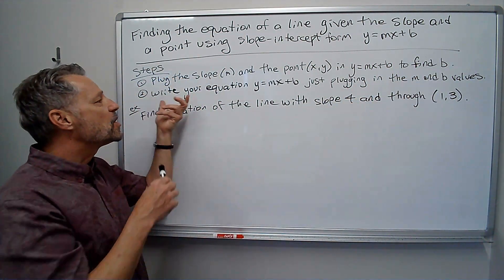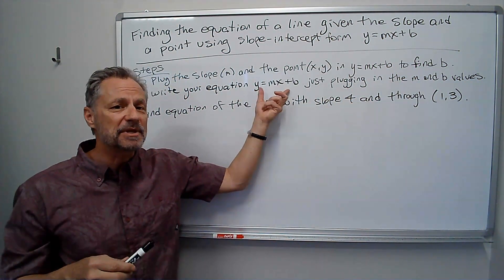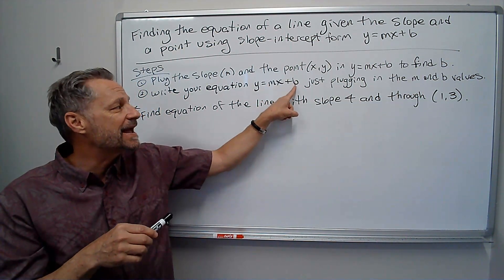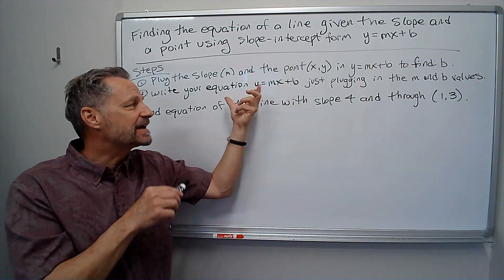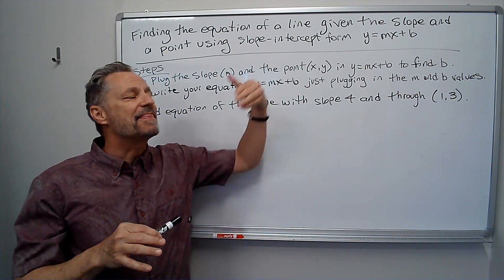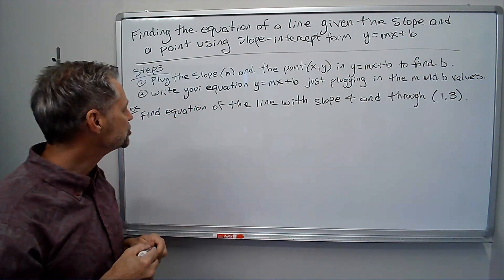Once we have that, we go back to y equals mx plus b, we plug in the m, the slope that we have, and the b that we just found, and leave x and y just as x and y. And that's going to be our equation of a line. So let me show you.